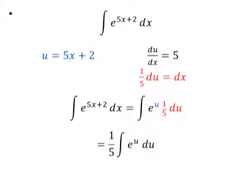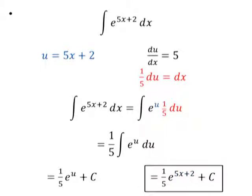Now I can integrate e to the u du just like normal. And so I'll get one-fifth e to the u plus c. And then substituting back in my original u, I get one-fifth e to the 5x plus 2 plus c. And this is my final answer.